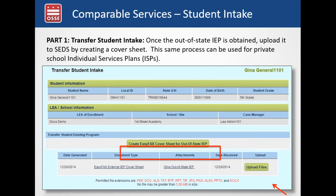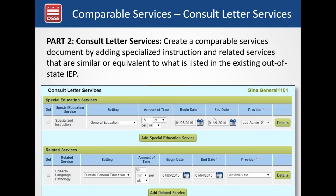In part one of the transfer student intake, once the out-of-state IEP is obtained and entered in SEDS with a cover sheet — or uploaded as a scanned file — this same process can also be used for ISPs from private schools. In part two, you use the information from the existing IEP for specialized instruction and related services that are similar or equivalent to the out-of-state IEP. For example, if they're receiving 60 minutes per week of speech outside the general ed setting, you document that time in part two, which helps you create your comparable services letter.